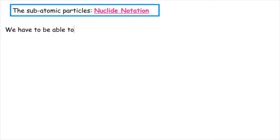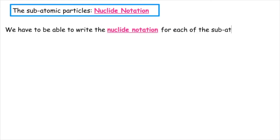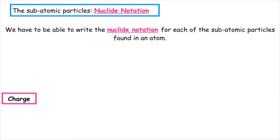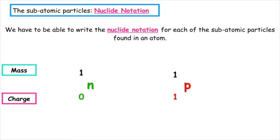We have to be able to write the nuclide notation for each of the subatomic particles found in an atom. Starting at the bottom, we are focusing on the charge, and at the top we already know that in nuclide notation that represents the mass number. A neutron has a charge of zero and has a mass of one. A proton has a charge of one positive and has a mass of one. The protons and neutrons are found inside the nucleus.